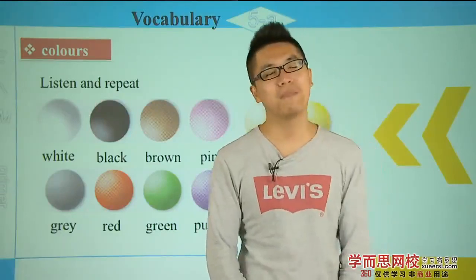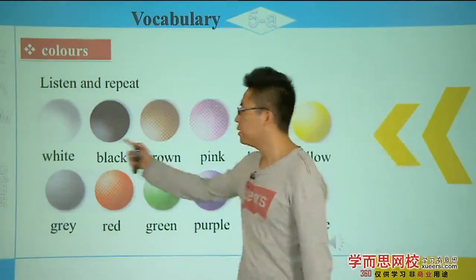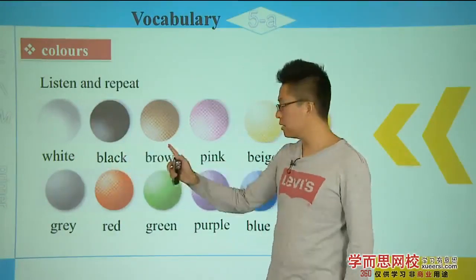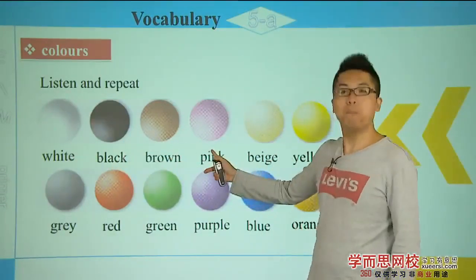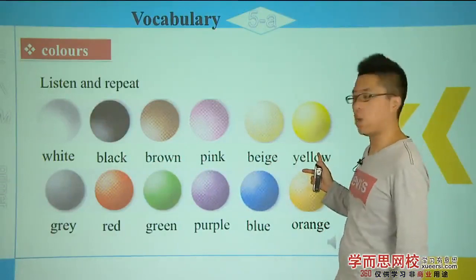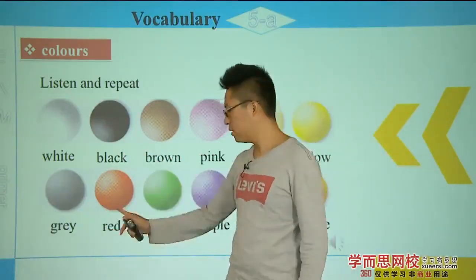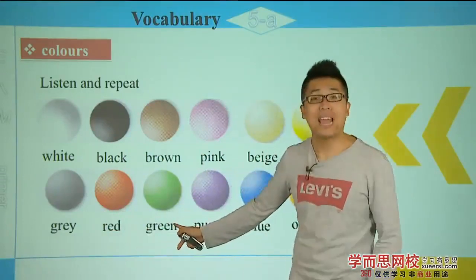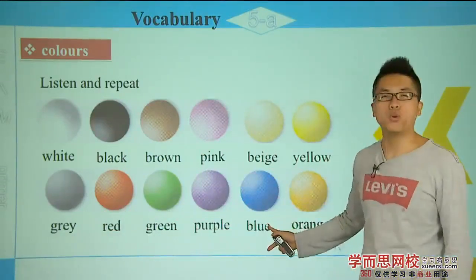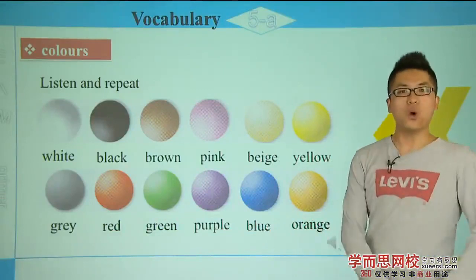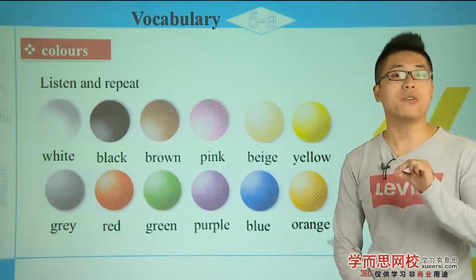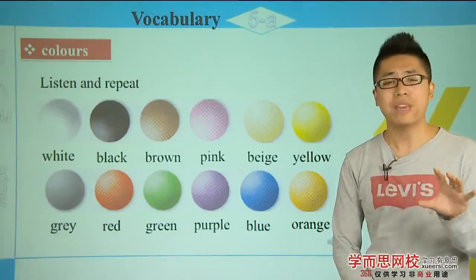Let's read the colors one last time — they are very easy. White, black, brown, pink, beige, yellow, gray, red, green, purple, blue, orange. We learn different colors because they are very important for describing things and people.